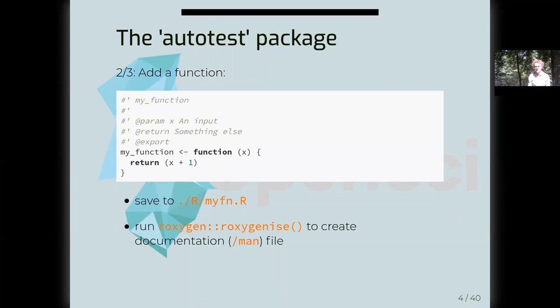The second step is to add a function. In this case, we add a really simple function that takes some input x, adds a value of 1 to it, and returns it, and adds some documentation to that function. When you then run the roxygenize command, that documentation turns into a corresponding help entry in the man directory of the package.